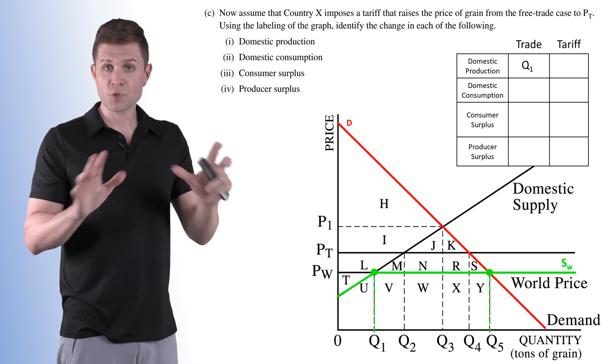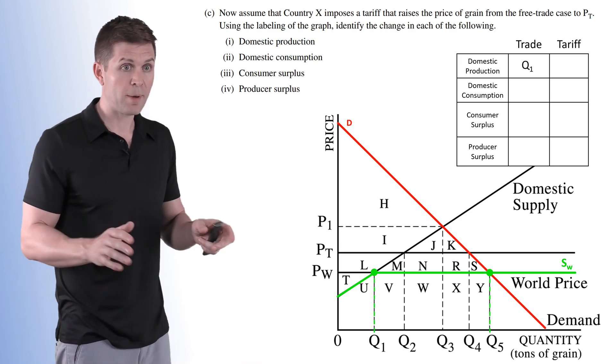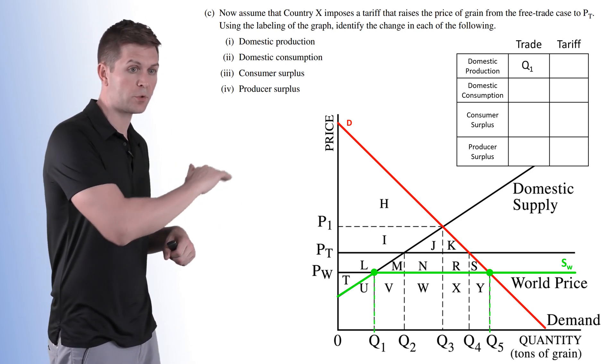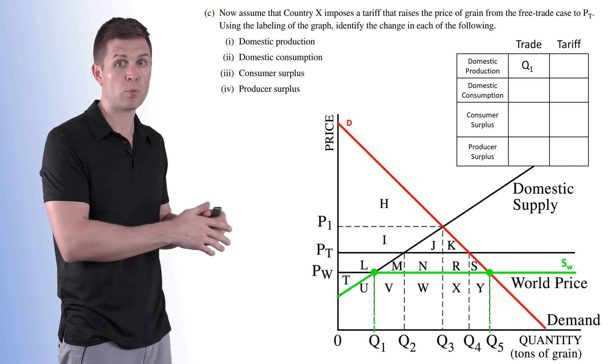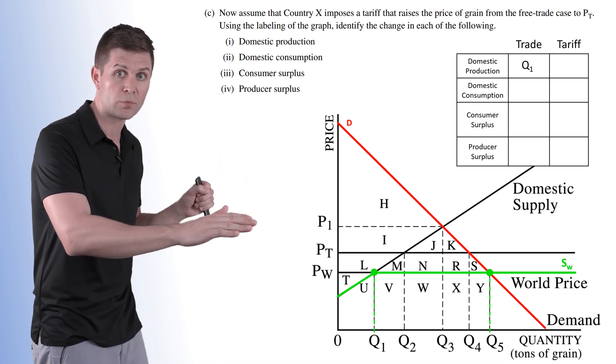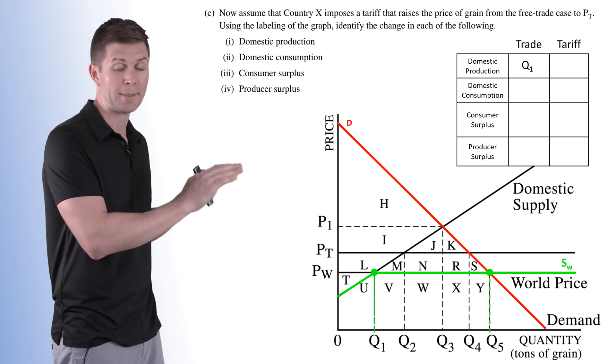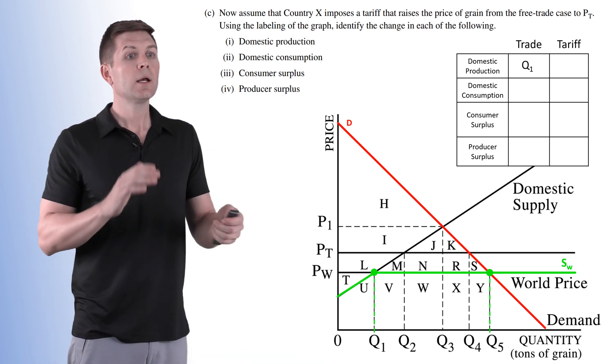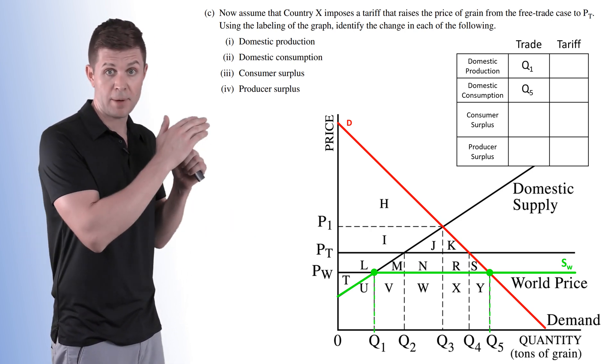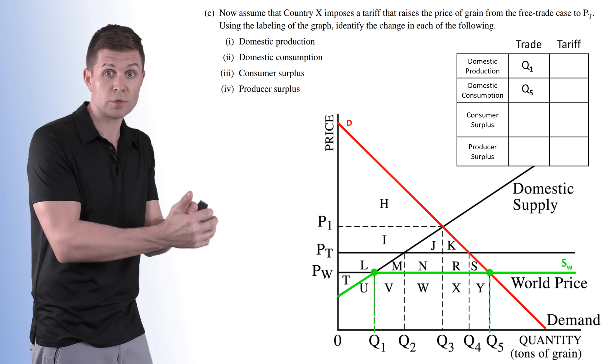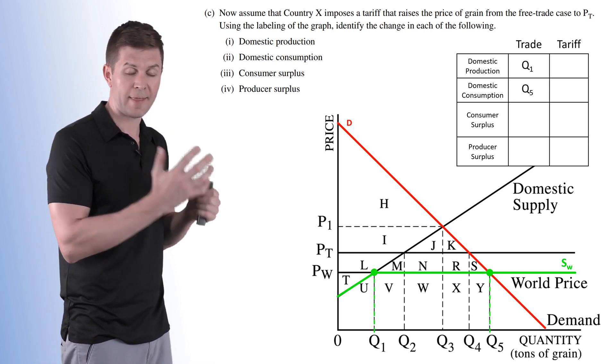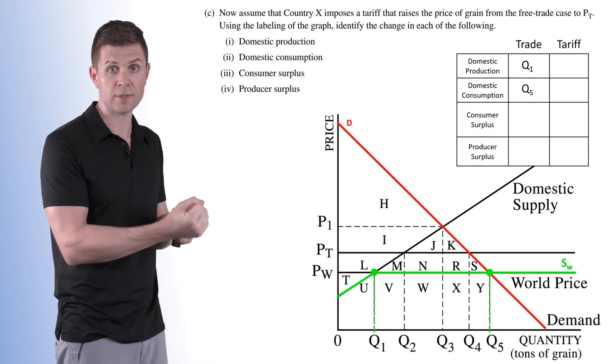So with trade, with no tariff, our domestic production is going to be at Q1. We established this in Part B. We know that we are going to produce up until Q1. At that point all the marginal sellers are going to leave because the price of the world takes over. We can get as much as we want at PW. Now domestic consumption occurs up until Q5. That's because the demand curve and the supply of the world curve intersect at Q5. Consumers are willing to buy that amount at the price that the world is offering.